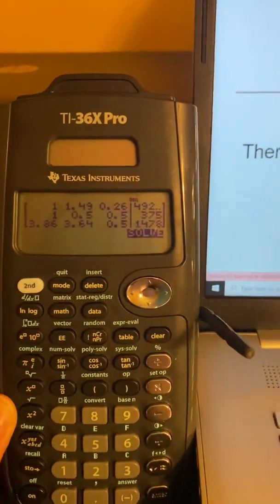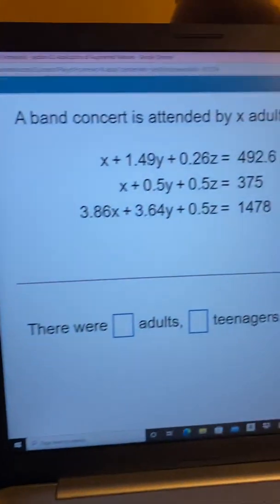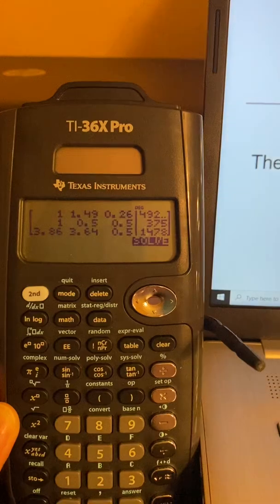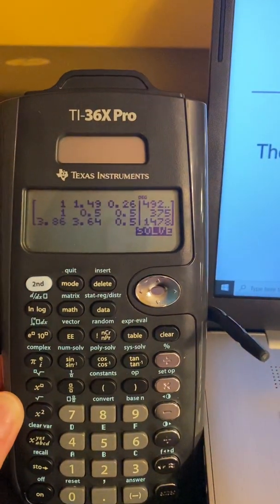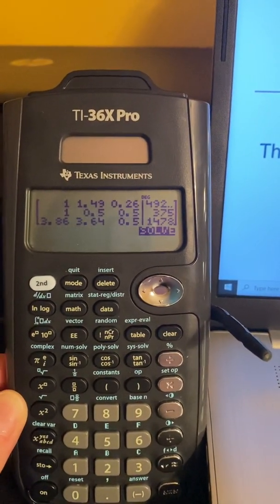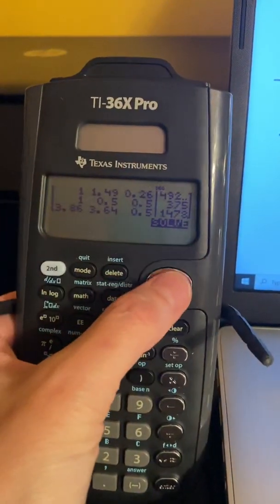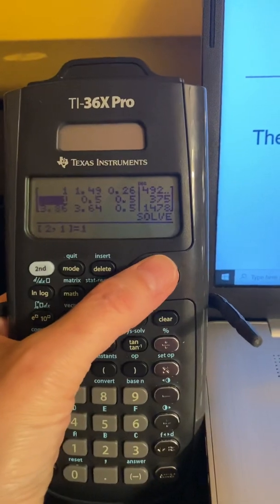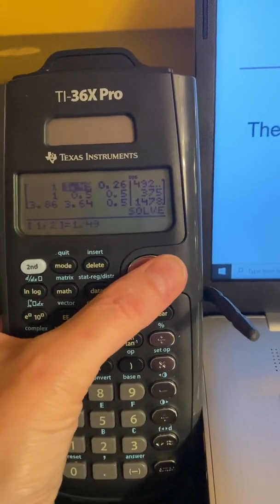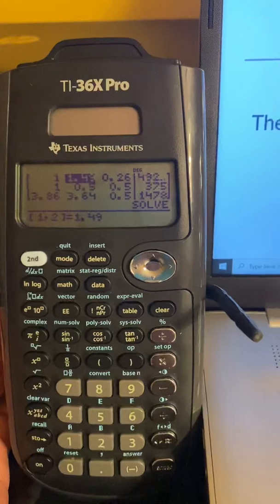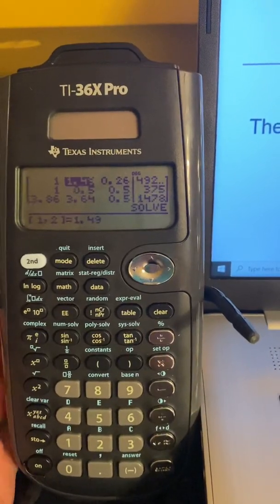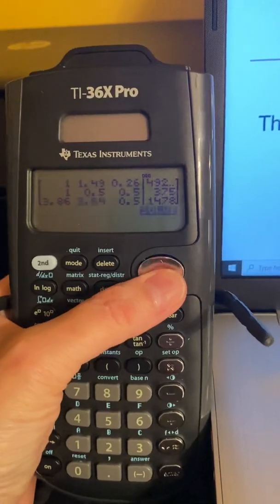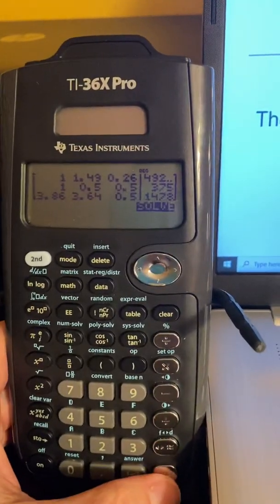So I have now input all the values from my system of equations into the calculator. If you look it over and you notice that you put something in wrong, all you have to do is use this to scroll or move your cursor to whichever value you input wrong, and then just retype it and hit enter. Once you make sure everything is correct, then go down to solve and hit enter.